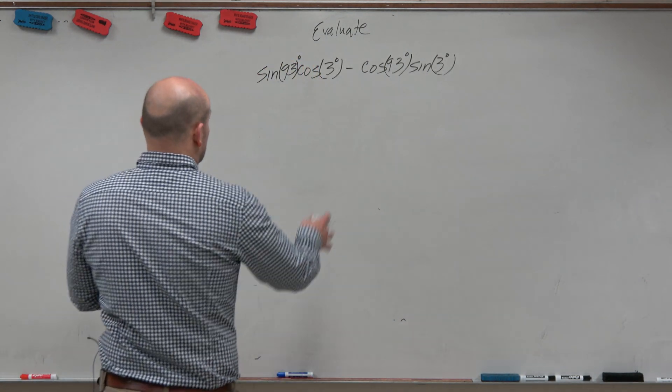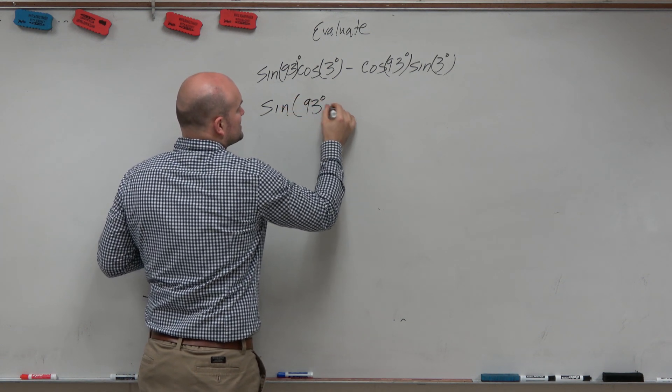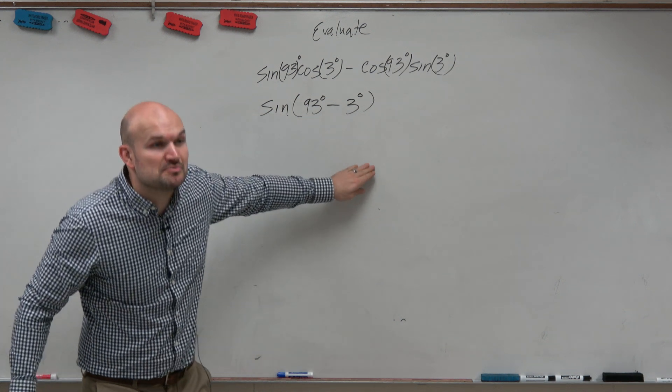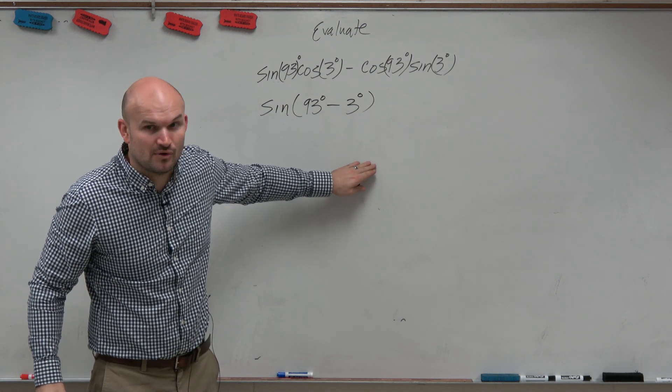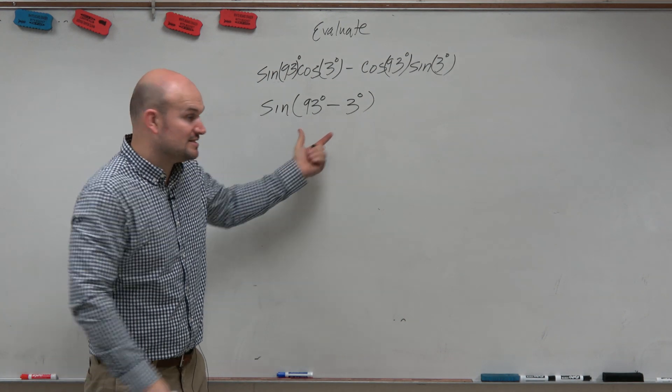this is how long it takes me to solve this. This is really the sine of 93 degrees minus 3 degrees. And again, remember the first problem we did today, the square root of 9 minus 4? Right? You can't distribute, but can you simplify these together?